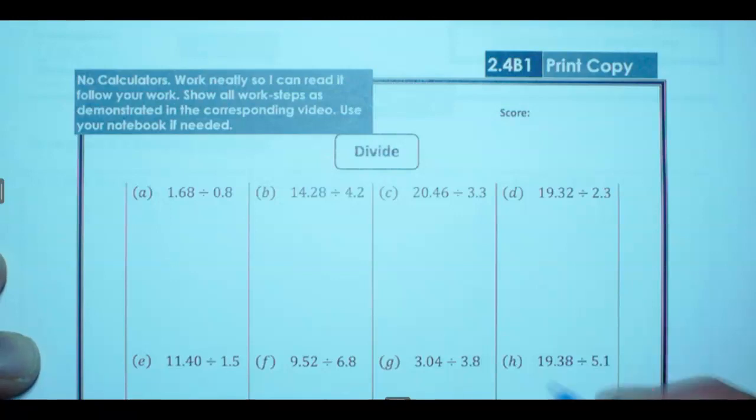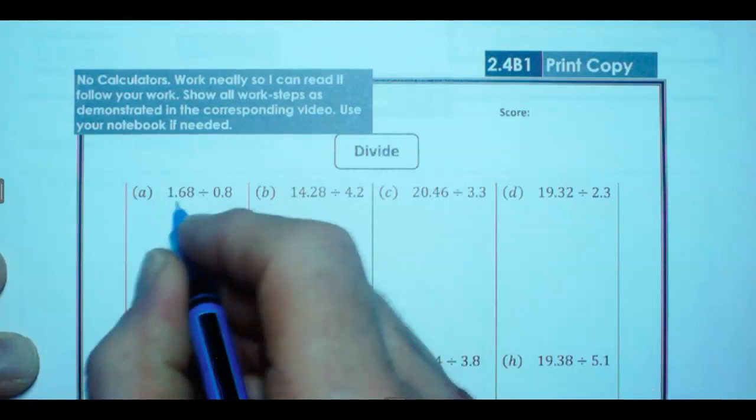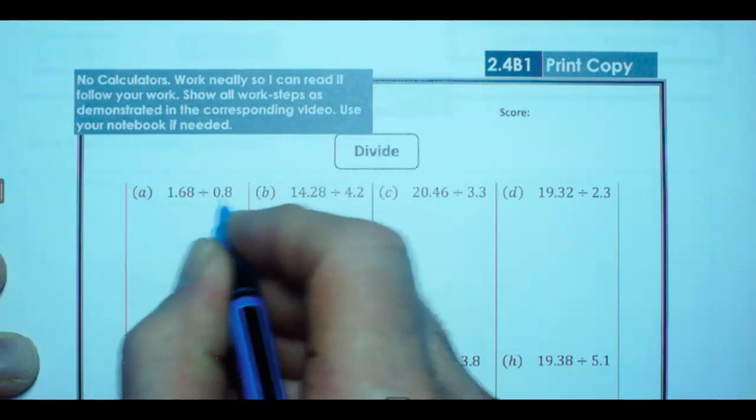Hello, this is a tutorial on 2.4b1. This sheet's a little bit more difficult than the other sheets because now we have a decimal in the divisor and in the dividend.